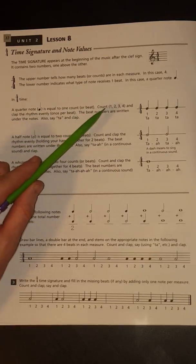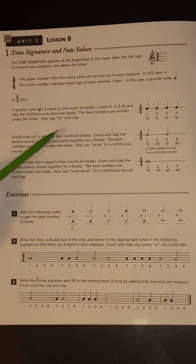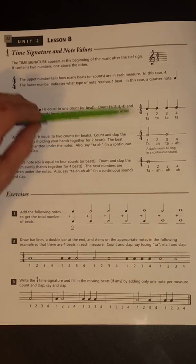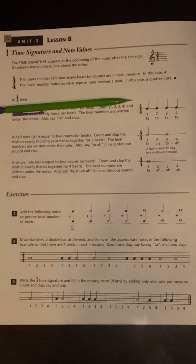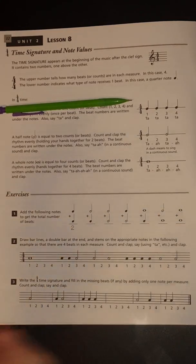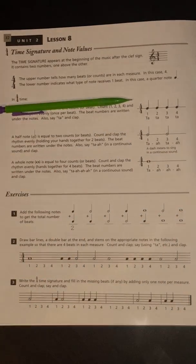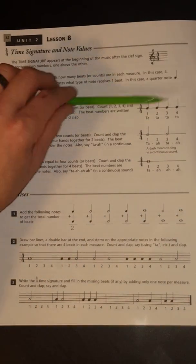a quarter note is equal to 1 count or beat. Count 1, 2, 3, 4, and clap the rhythm evenly once per beat. The beat numbers are written under the notes. Also say ta and clap. For this example, you would just go ta, ta, ta, ta, or 1, 2, 3, 4. That's what that rhythm is. 4 quarter notes, right?